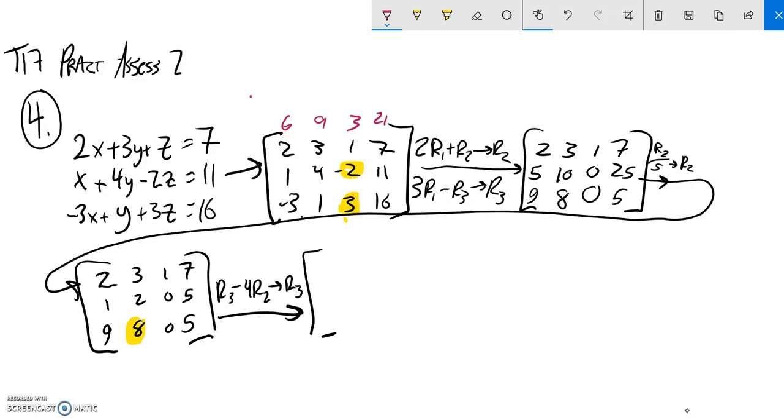So, 4 times row 2, all of these are going to get multiplied by 4. So, that makes this a 4, 8, 0. 5 times 4 is 20. And then I'm going to subtract it. So, I'm going to subtract all of those.